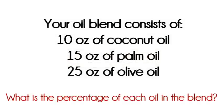Hypothetically, your oil blend recipe consists of 10 ounces of coconut, 15 ounces of palm, and 25 ounces of olive. It's pretty simple when the recipe is given, but what if you wanted to change one of the oils? Well, you would need to know the percentages.